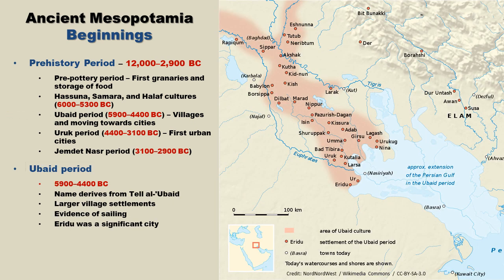The Ubaid period is the next significant prehistoric time frame in Mesopotamia. The name derives from Tel Al-Ubaid, where the earliest Ubaid material was excavated. The Ubaid pottery shows clear differences from the earlier Halaf pottery. Ubaid culture is also characterized by larger village settlements, and some of the first public temples begin to appear. Villages likely contained specialized laborers and craftspeople, though the bulk of the population was focused on agriculture. There is also evidence of sailing during this period, and it has been suggested that a trade relationship — perhaps even a pottery trade — existed between Ubaid settlements and Arabian villages.